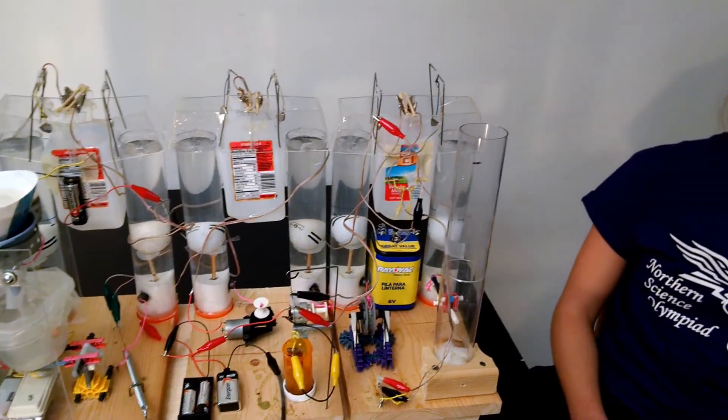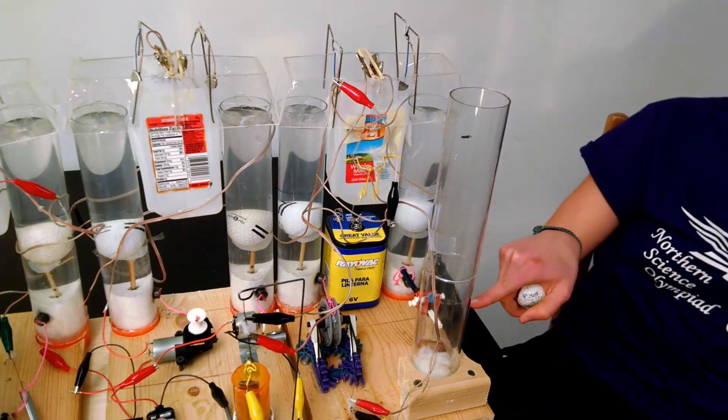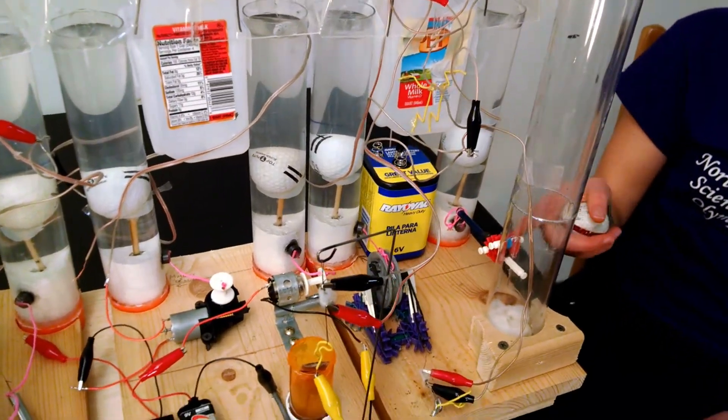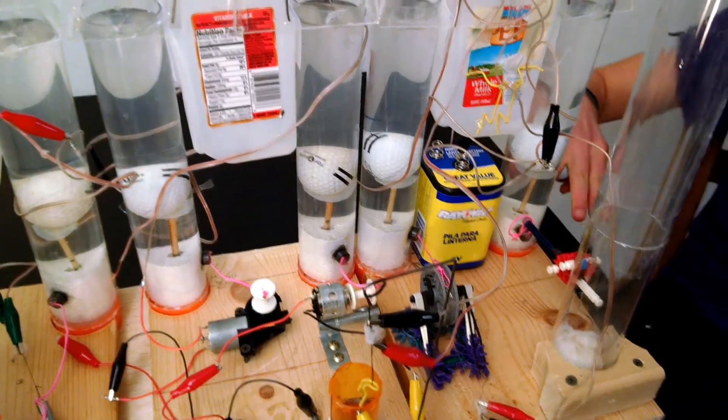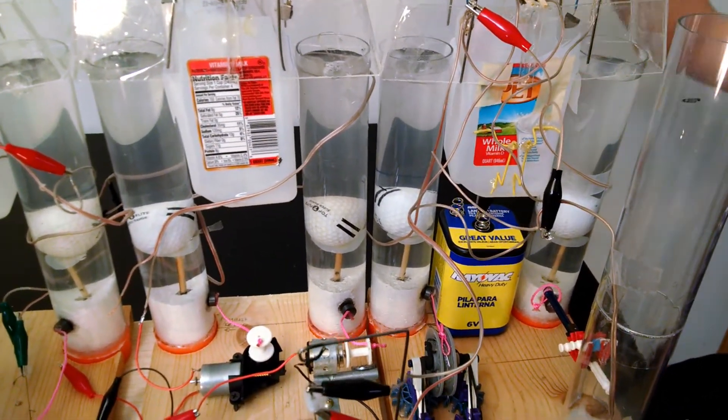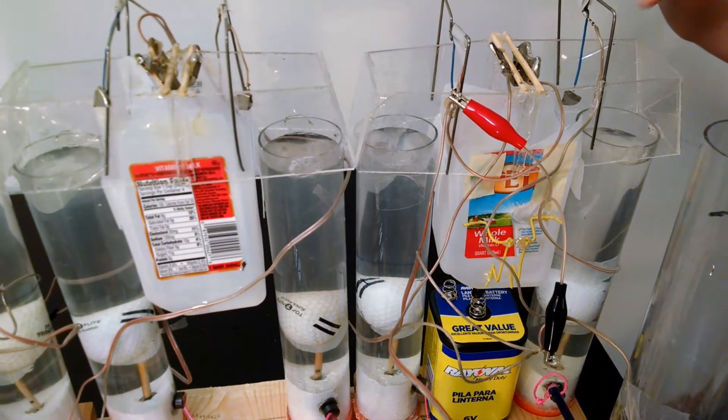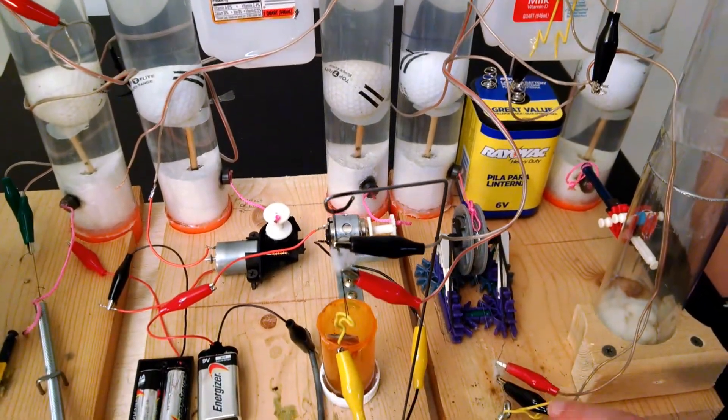And so what I do to start it is I drop this golf ball down this tube which hits a lever here and this lever will pull a magnet off letting a float rise up with a golf ball. And as the golf ball is falling into the scoring jug it will trigger a magnetic switch which will make the...